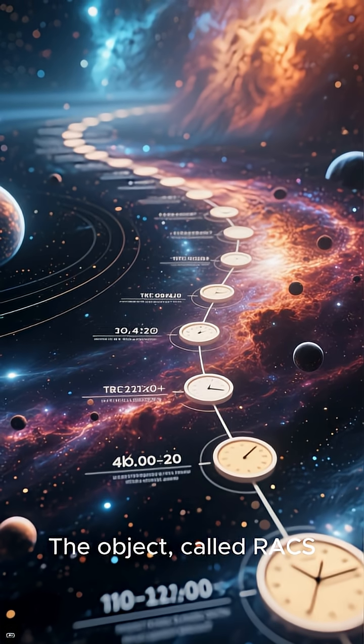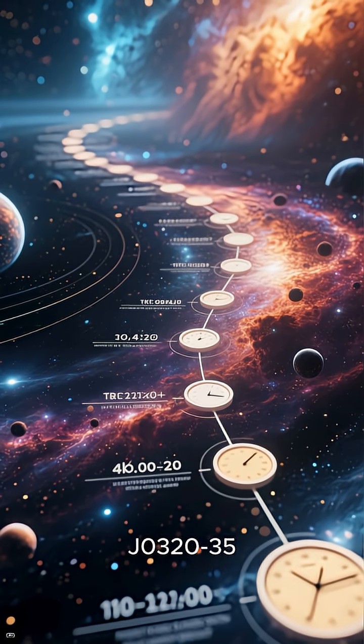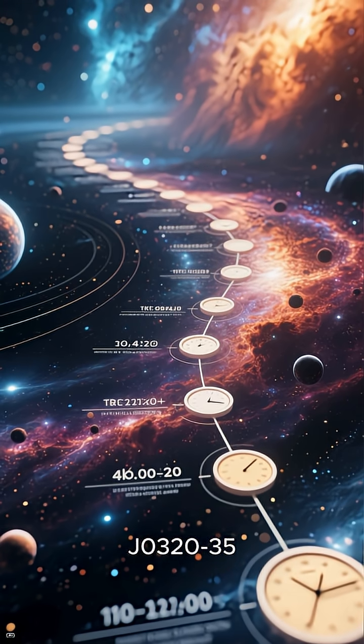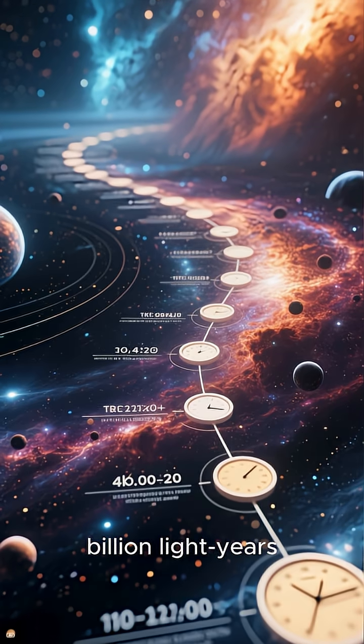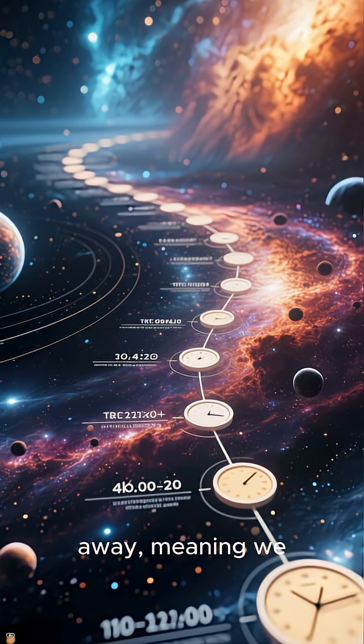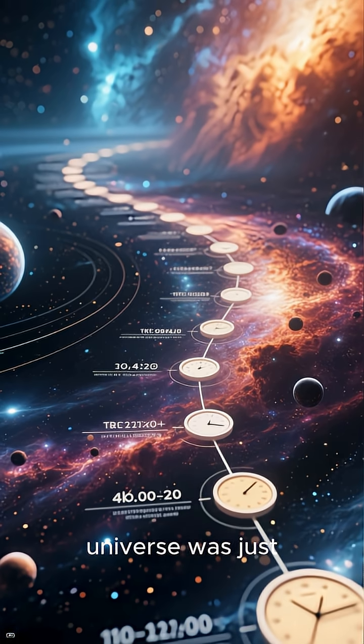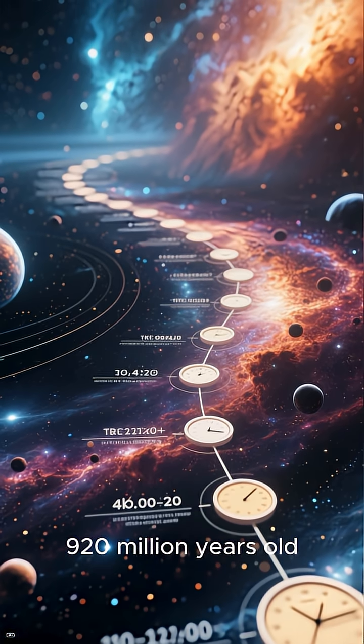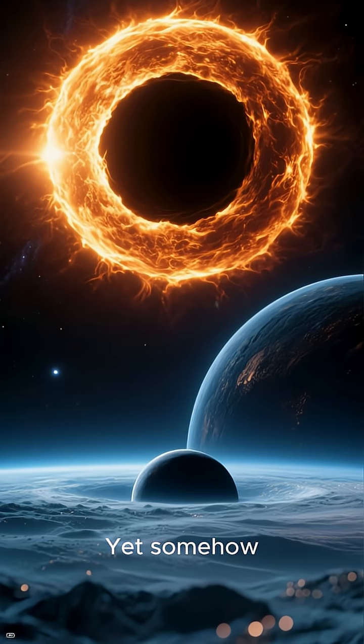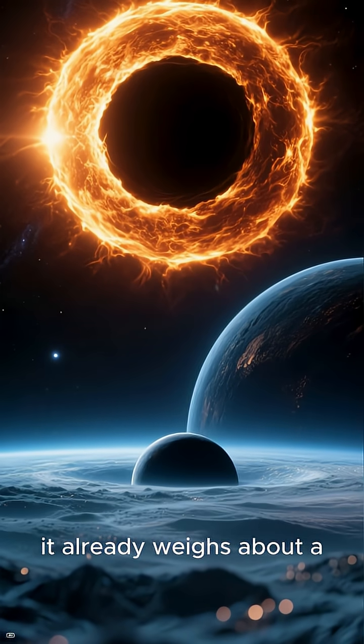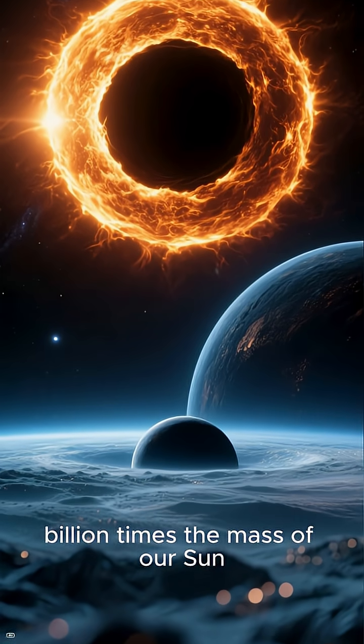The object, called RACSJ 0320235, lies 12.8 billion light-years away, meaning we see it as it was when the universe was just 920 million years old. Yet somehow, it already weighs about a billion times the mass of our sun.